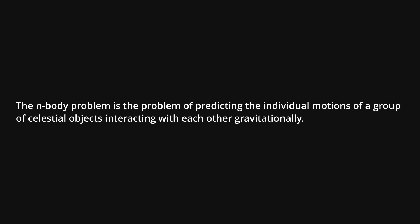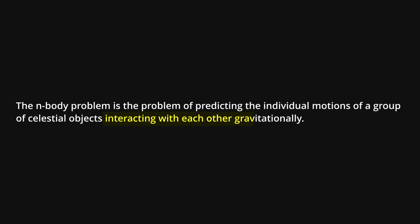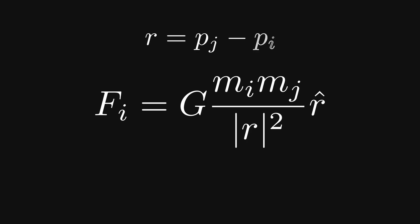Let's move on to the next part of the sentence. Interacting with each other gravitationally. The force that one body feels from another is equal to the product between the gravitational constant, both masses, the inverse square of the distance between them, and finally the unit vector pointing from the first body towards the source.